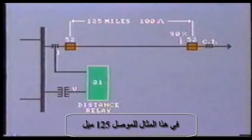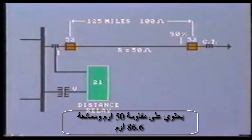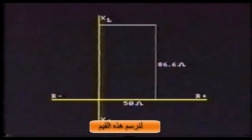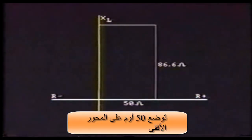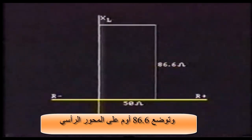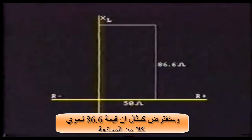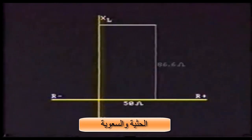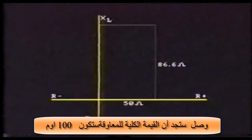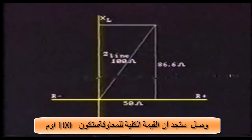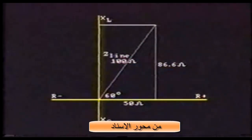It is important to note that we are talking about the impedance measured by the relay, not the resistance, because the conductors contain both resistance and reactance. Typically, the conductors in this 125-mile-long transmission line will contain a resistance of 50 ohms and reactance of 86.6 ohms. Let's plot this on an impedance diagram. Resistance is shown along the horizontal reference vector, and inductive reactance is shown on the vertical axis. Capacitive reactance, if present, would be shown on the negative vertical axis. In this example, we assume the quoted 86.6 ohms reactance has taken into account both inductive and capacitive reactance. Plotting resistance and reactance, we find that the total impedance comes to 100 ohms at an angle of 60 degrees from the reference vector.